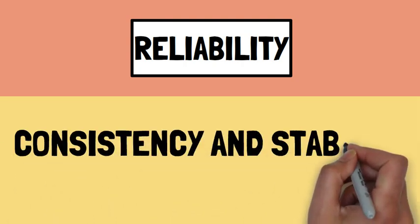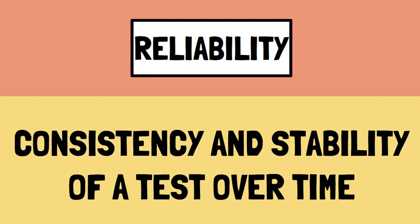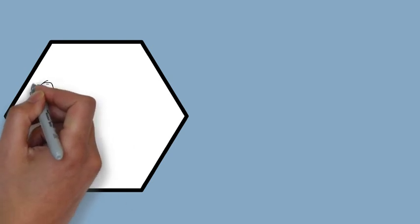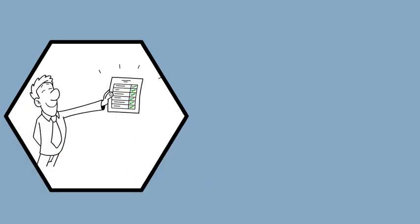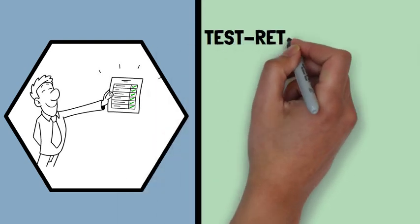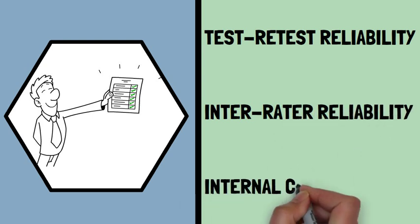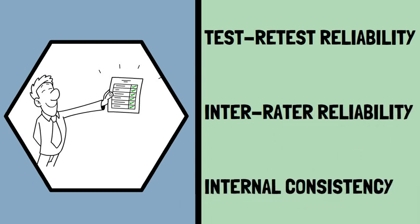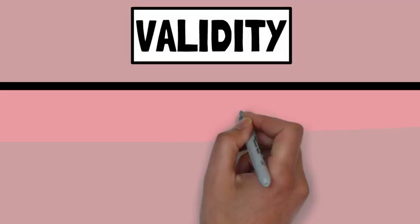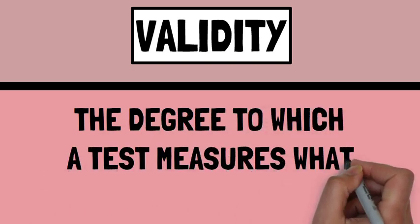Reliability is a crucial component of psychological testing. Reliability refers to the consistency and stability of a test over time. A reliable test produces consistent results across multiple administrations, demonstrating that the test measures what it is supposed to measure. Reliability can be measured in various ways, including test-retest reliability, inter-rater reliability, and internal consistency.